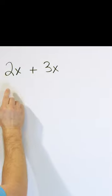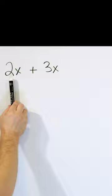Here is our first expression, 2 times x plus 3 times x. The only way you can add terms in algebra is if the variables match.